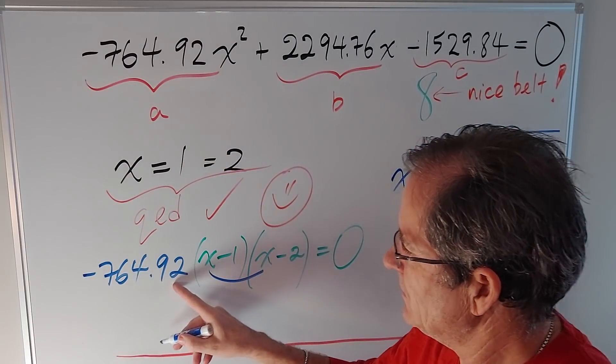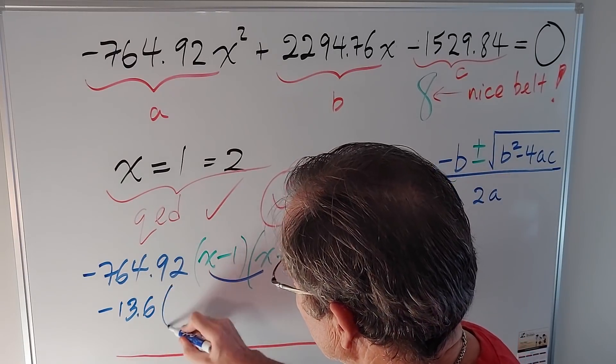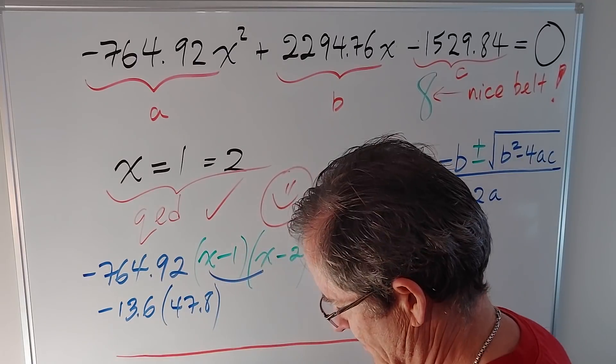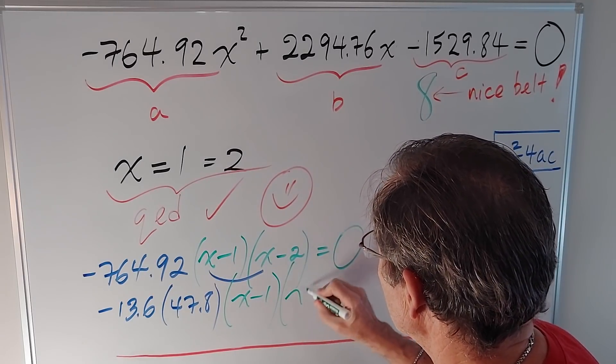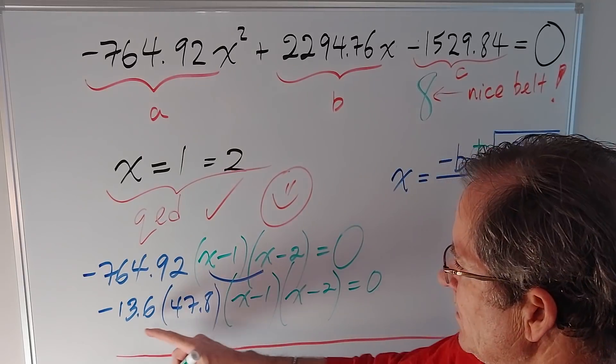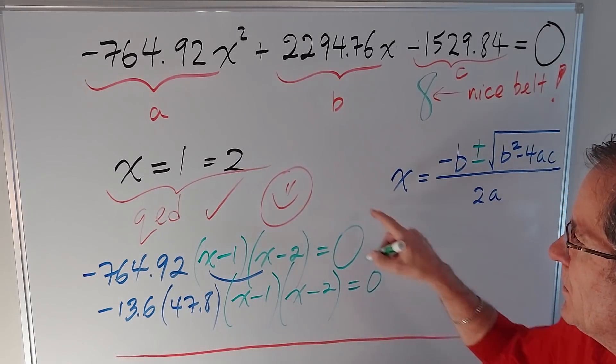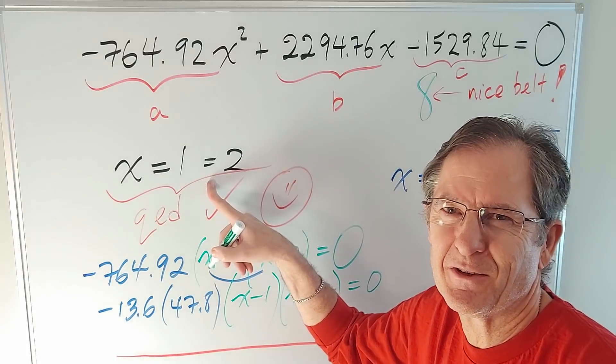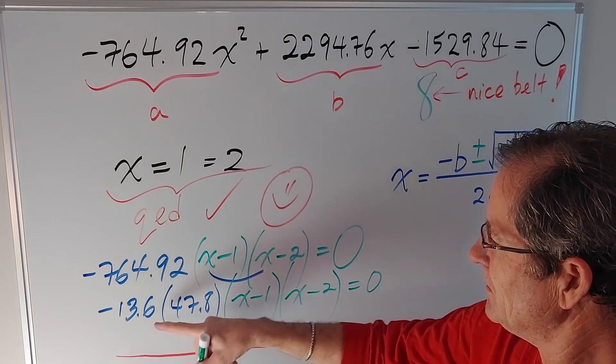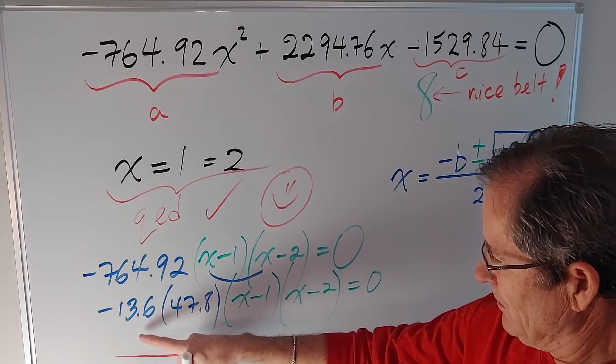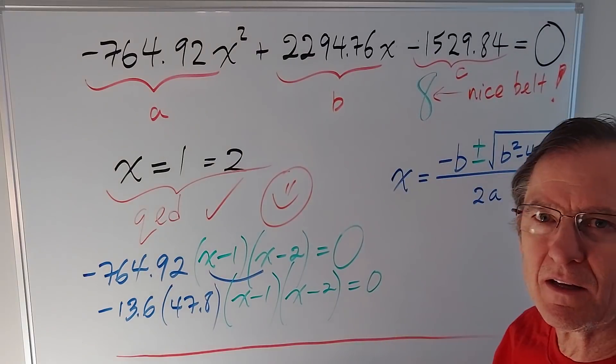By the way, this number can be factored in a number of different ways. One way I factored it was negative 13.6 times 47.8 times the remaining factors, x minus 1, x minus 2, equals 0. But those factors are irrelevant because only this can make it 0 and that can make it 0. That's where we ended up with 1 equals 2 for the fourth or fifth time, I believe. So if you want to factor this in a different method, you can. Again, for homework, I want you to multiply this out. Make sure you get this equation so that everything checks.